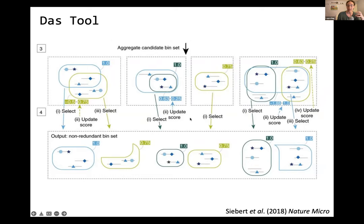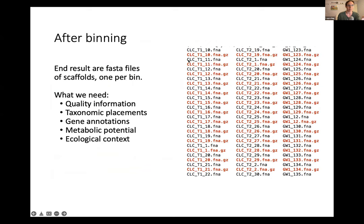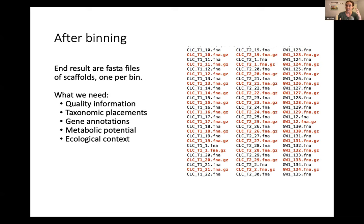At the end of the day, you've generated coverage tables, figured out nucleotide frequencies, run various binners, combined them, and generated a final curated set of bins. What you have are FASTA files — just raw DNA information, long pieces — one for each of your bins. Moving from this, what we really need is quality information, taxonomic placements — who are these organisms and how good a quality are these bins — what do they encode, what does that tell us about their capacity for function in an environment, and what does that mean in terms of our environment in question?